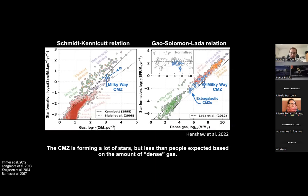The CMZ is said to be inefficient at forming stars. On the left is the Schmidt-Kennicutt star formation relation — the Milky Way CMZ is roughly consistent with it, maybe slightly below but within scatter. On the right is the Gao-Solomon-Lada relation, relating dense gas — traced by HCN or ammonia, denser than just CO-traced molecular gas — to star formation rate. In this relation, valid for Milky Way clouds and integrated external galaxies, the CMZ is a little below.